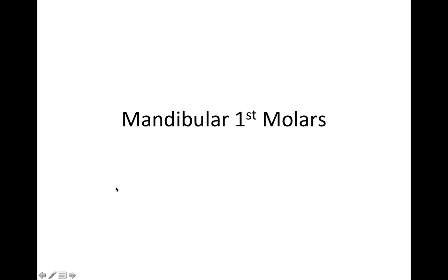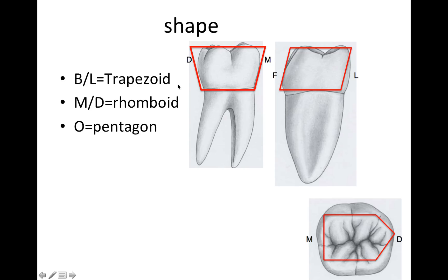Today we're going to be looking at the mandibular first molar. First, we'll look at its shape from multiple views: from the buccal and lingual view it's a trapezoid, from the mesial/distal view it's a rhomboid, and from an occlusal view it's a pentagon.